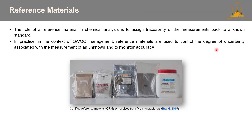The role of a reference material in chemical analysis is to assign traceability of measurements back to a known standard. The selection of an appropriate certified reference material is a complex task, and it's recommended that an appropriate authority such as a QAQC specialist be consulted. Reference materials typically only provide information about the analysis of the sample inclusive of digestion, and provide no information about the quality of collection and preparation prior to analysis. In the context of QAQC management, reference materials are used to control the degree of uncertainty associated with measurement of an unknown and to monitor accuracy.